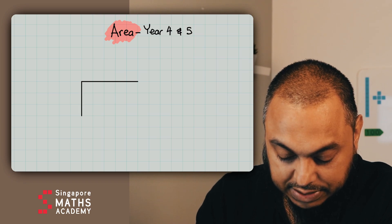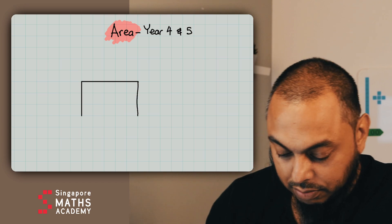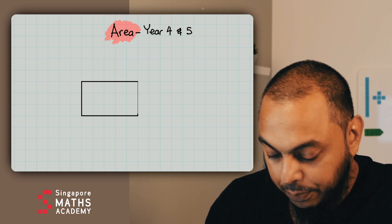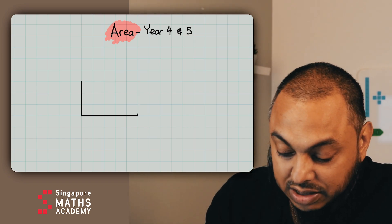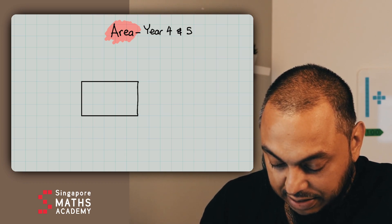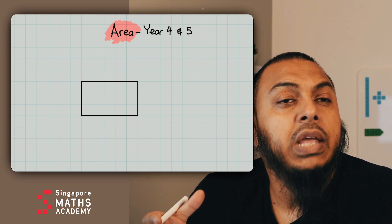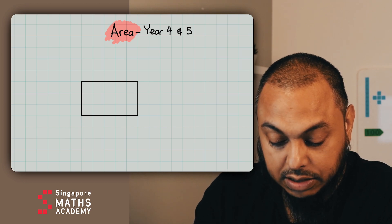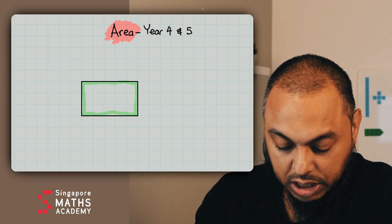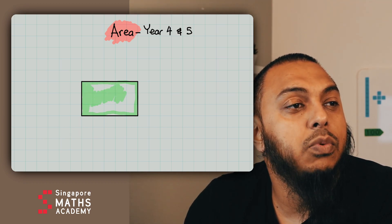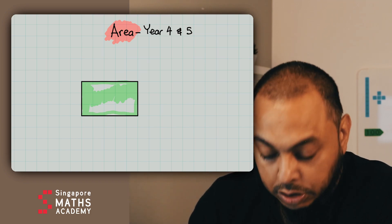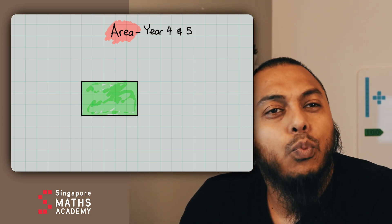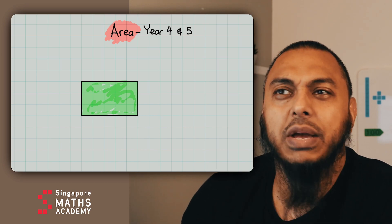With area, it doesn't measure length — it measures the space that a 2D shape takes up. Here I could easily measure a line, but if I have a lovely looking rectangle, we can't say this is going to take up five centimeters, because it's not really a length. This shape takes up a certain amount of space. If it's taking up a certain amount of space and is a 2D shape, we call that space area. All of this space that the 2D shape is taking up is called area.